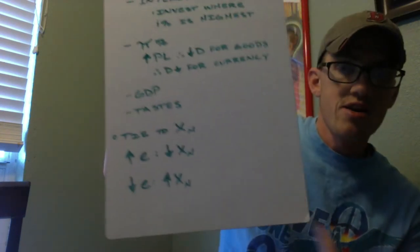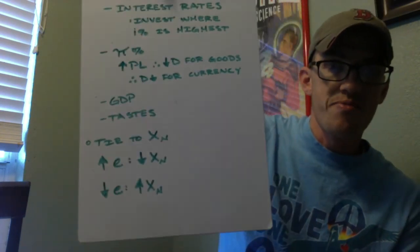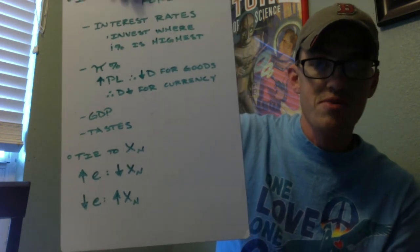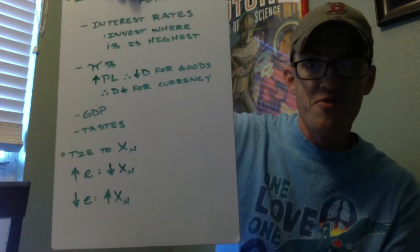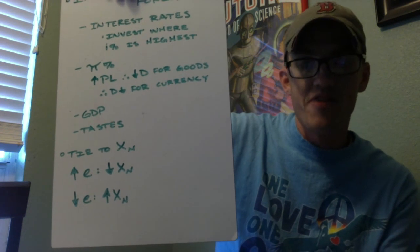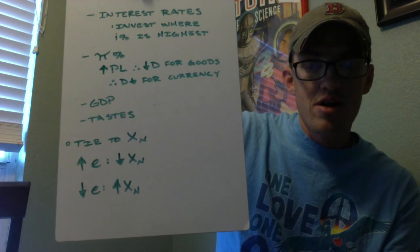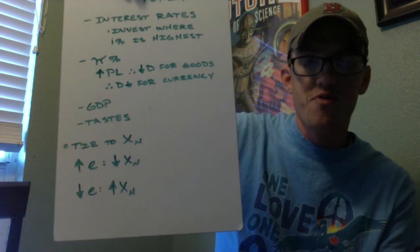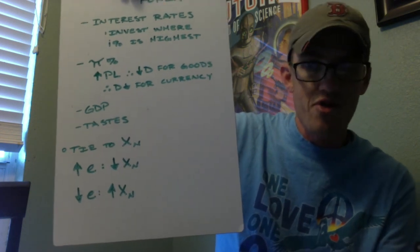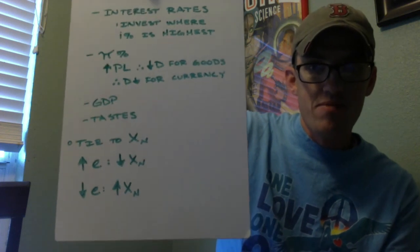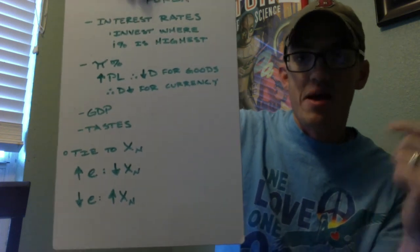How does this all tie to net exports? Well, higher exchange rates lead to more expensive currency and more expensive prices. We buy less of them. Net exports go down. Decreasing exchange rates, it is now cheaper for foreigners to buy our stuff because it takes less of their currency to buy ours. Net exports go up. Alright, that's it. Important stuff here.